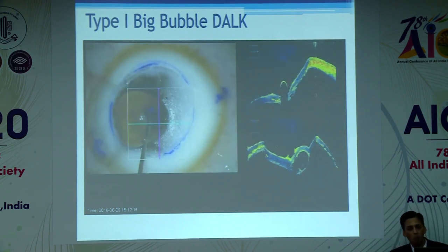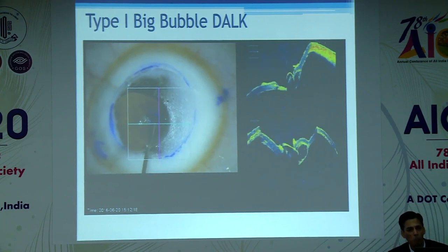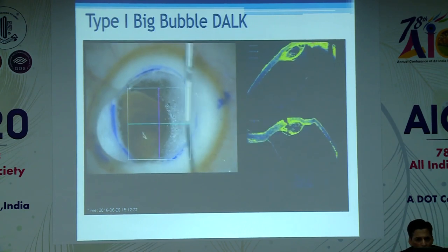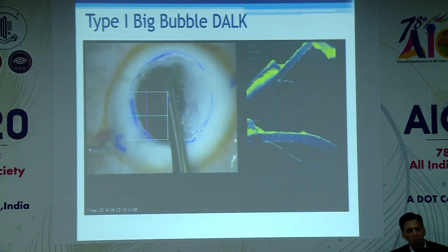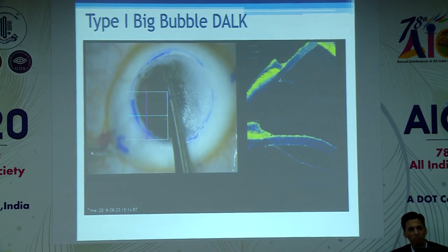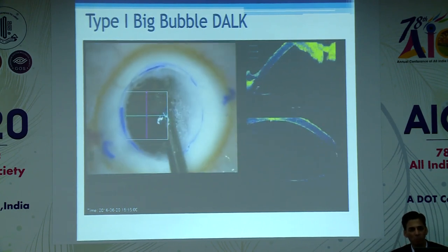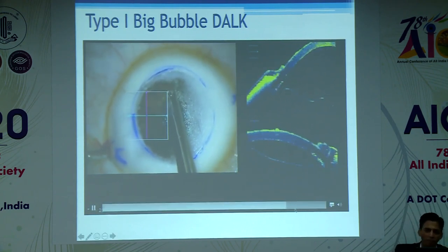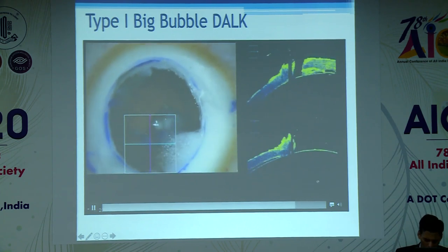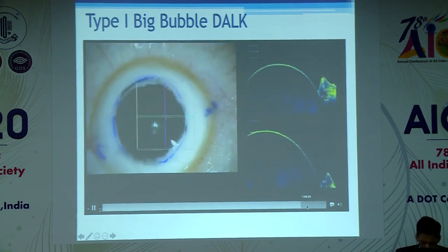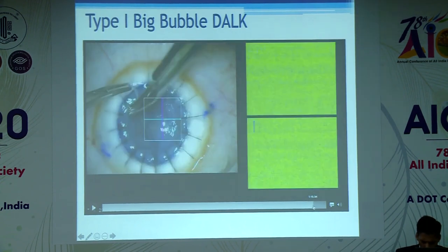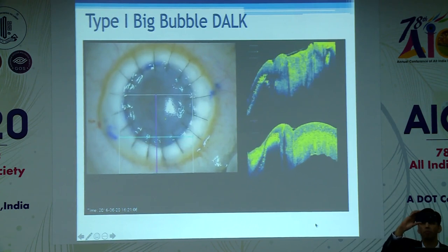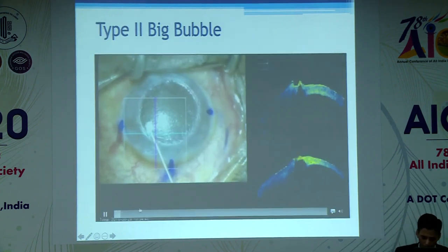This can be reinforced again with the viscoelastic agent so that the supra-Descemet's membrane compartment is reinforced — it drops down like a kangaroo's pouch — followed by excision of the overlying stromal layers. Subsequently, as these are removed, the bare Descemet's membrane is visible, over which viscoelastic is applied, washed, and a full-thickness donor cornea from which the endothelium has been removed is sutured with 10-0 monofilament nylon sutures.